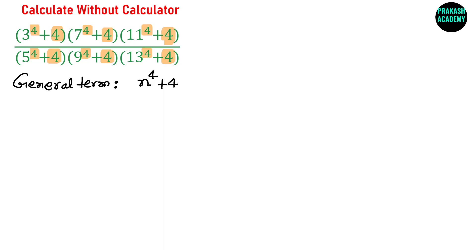In this case n can be 3, n can be 7, n can be 11, or it can be 5, 9, or 30 — any value. My task is to factorize n raised to the power 4 plus 4.